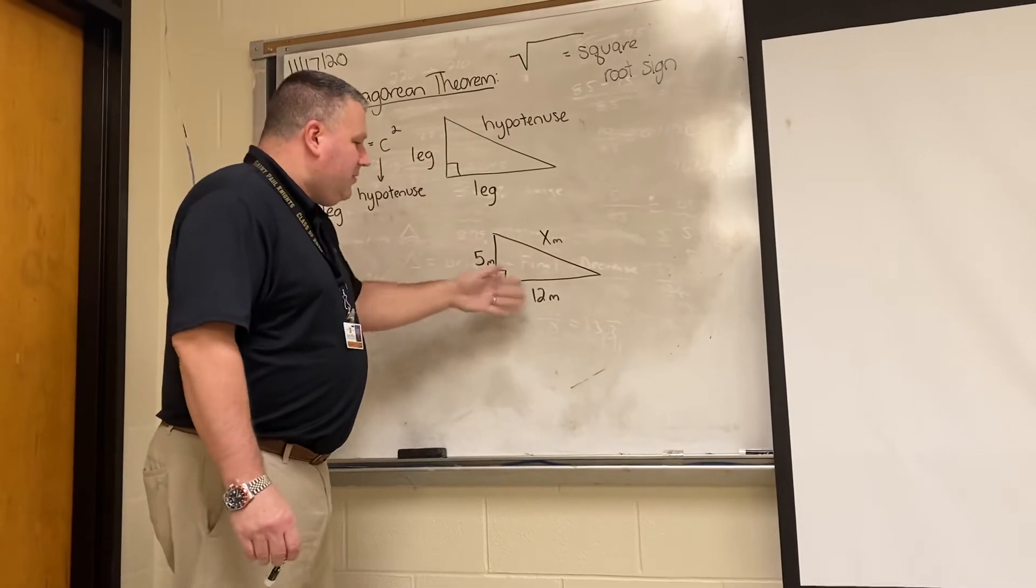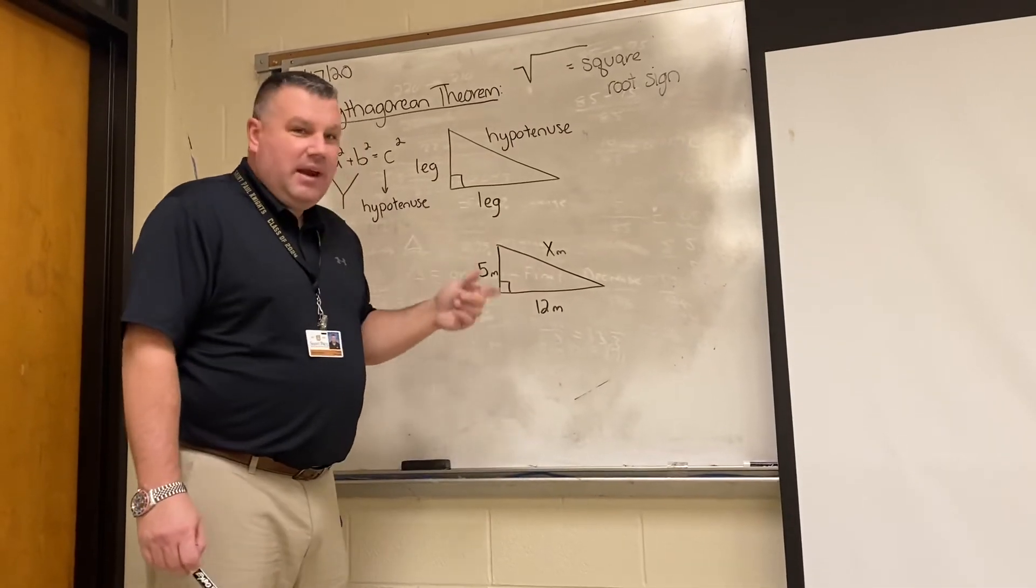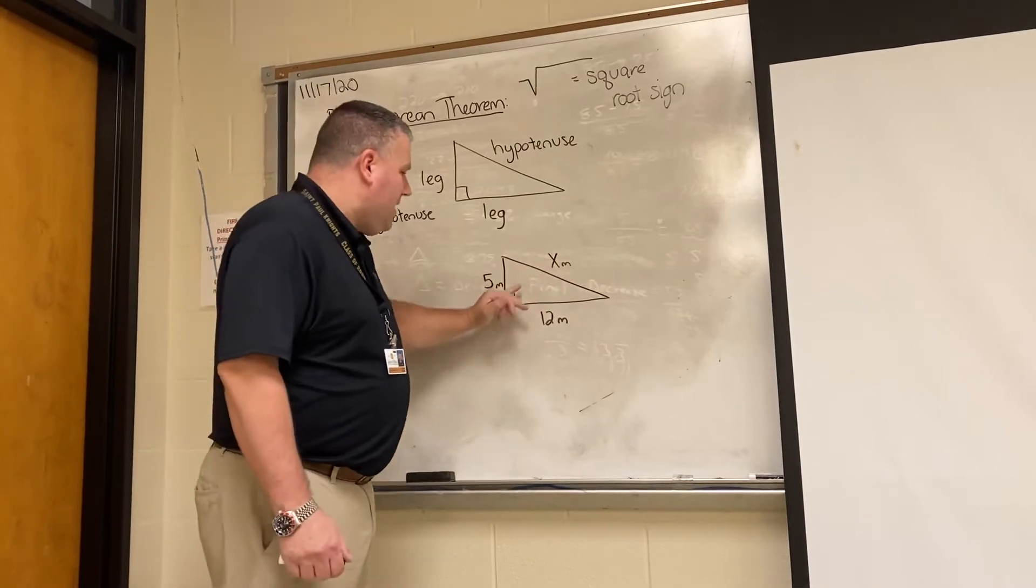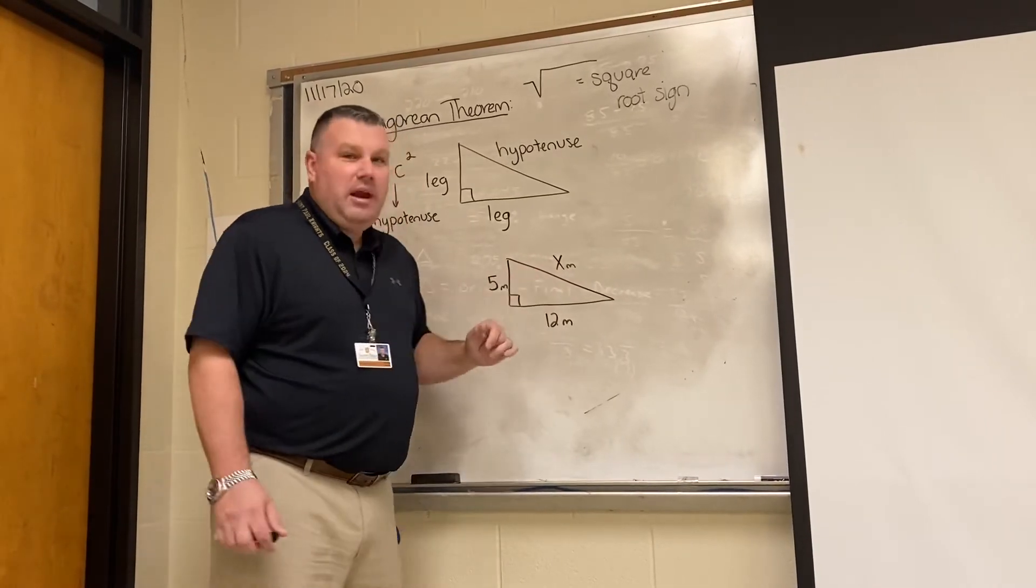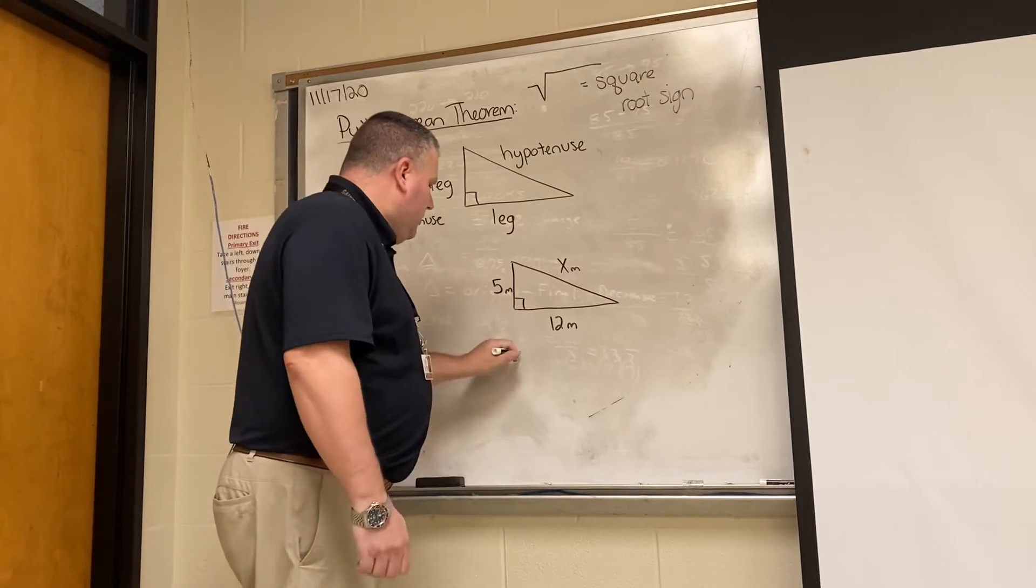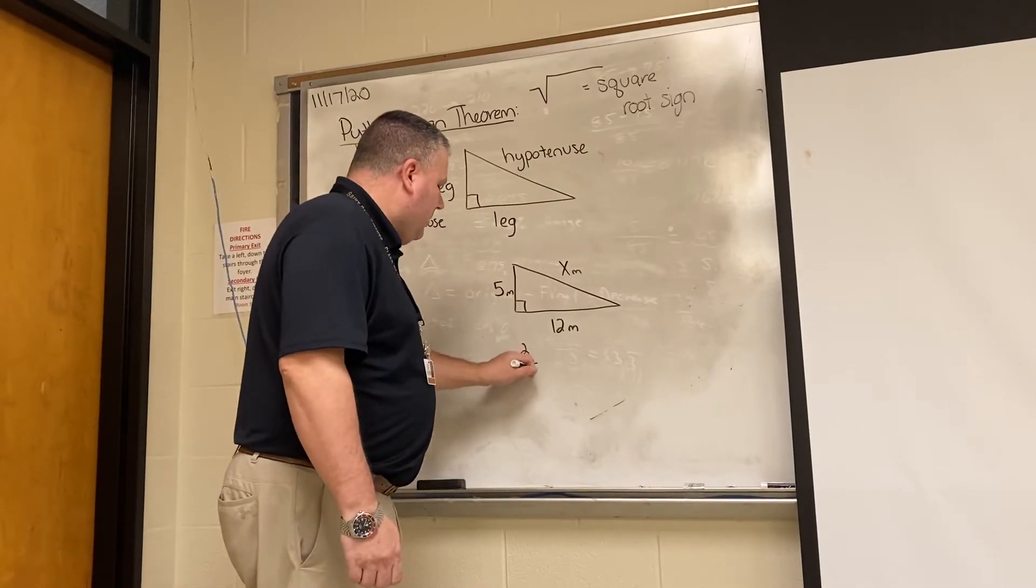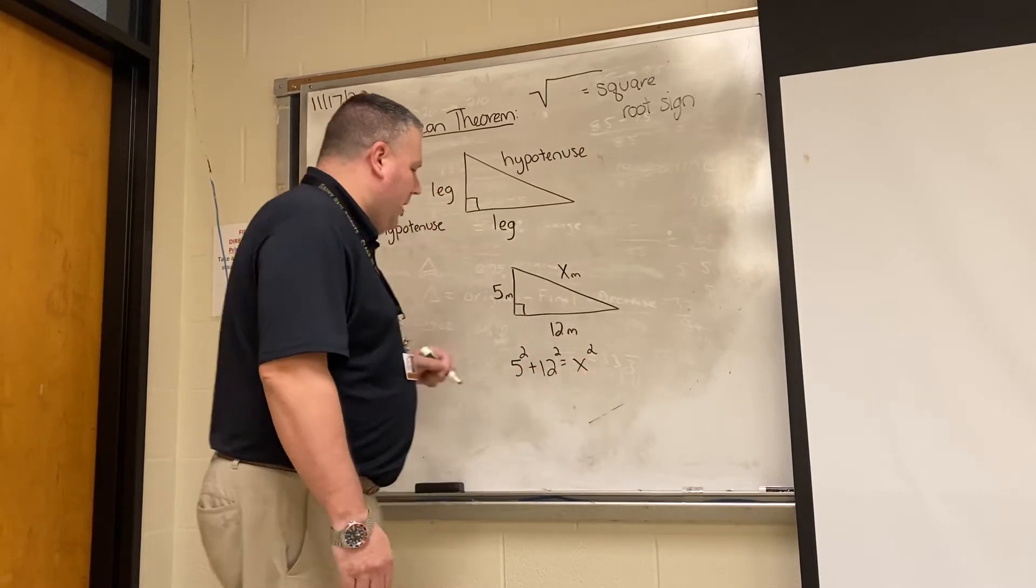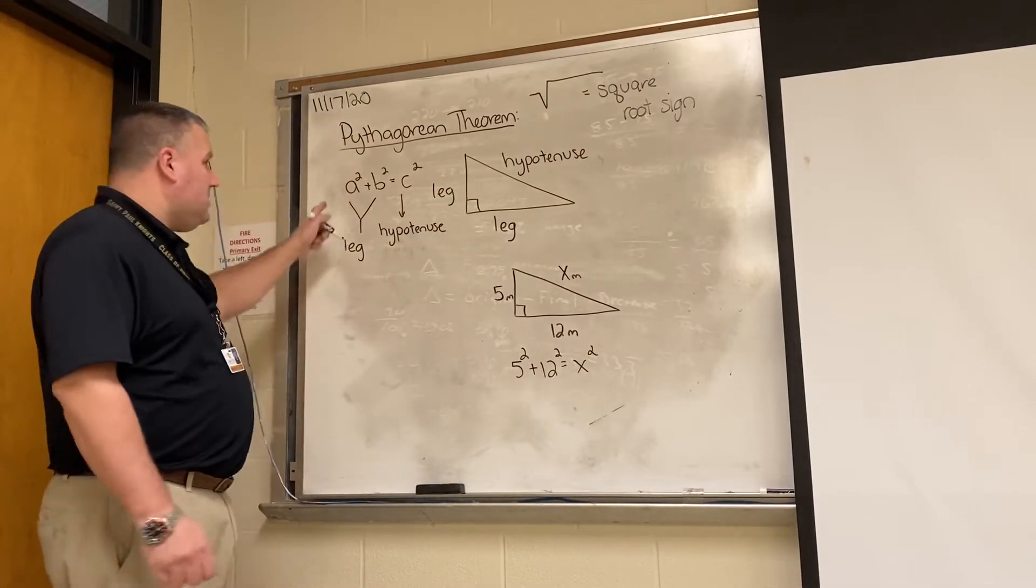We have two out of the three sides. We're looking for the third side. This is a right triangle. It is always equal to the hypotenuse. That is the side opposite the 90 degree angle, which is the largest side. So I would do 5 squared plus 12 squared is equal to x squared. Just as the formula states.